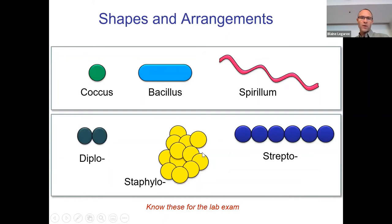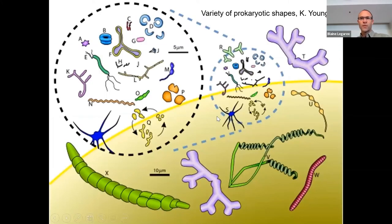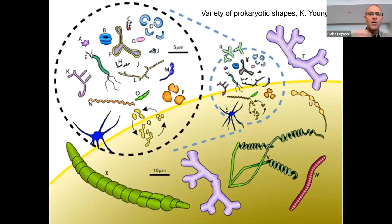Know these arrangements — you'll get a chance to use these words in next Thursday's lab and you'll need to know them for the lab exam as well. And don't think rods and cocci are the only shapes. There are many, many shapes of bacteria out there — here's a paper showing a whole bunch of different ones.